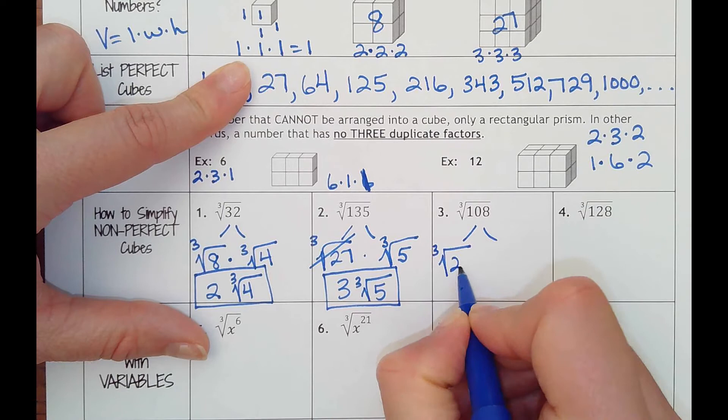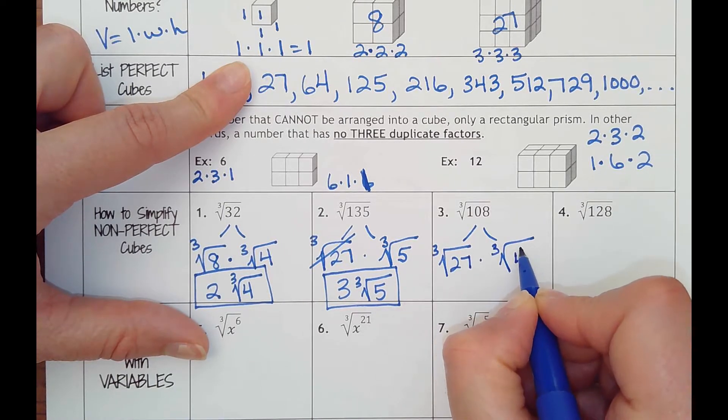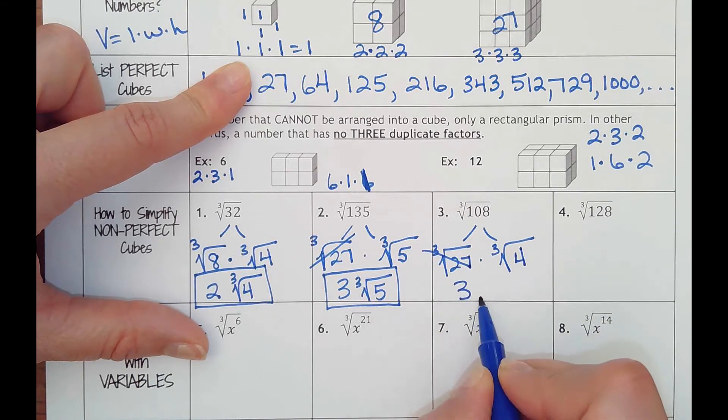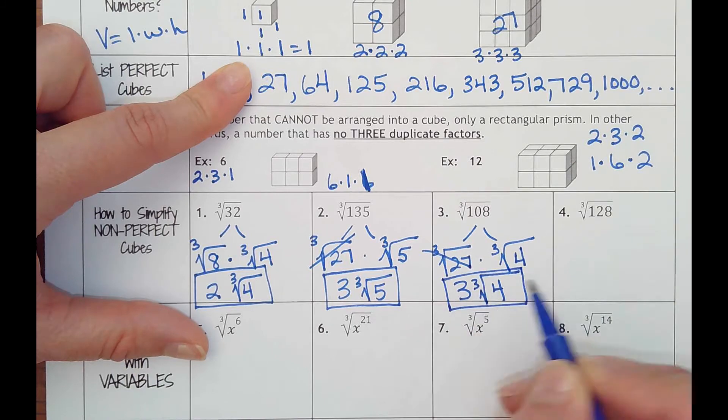Yep, four and 27. So we got cube root of 27 times cube root of four. Cube root of 27 we already knew was a three, just a normal three, and then I would have cube root of four left over.